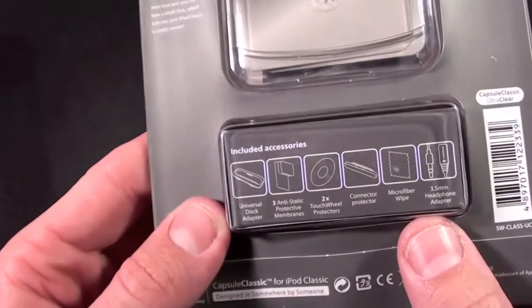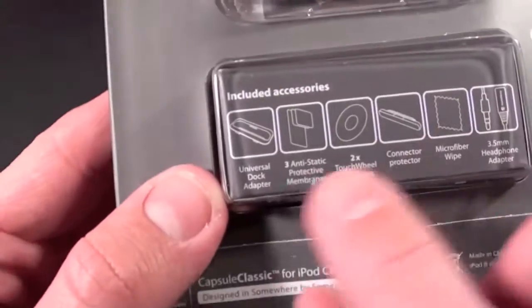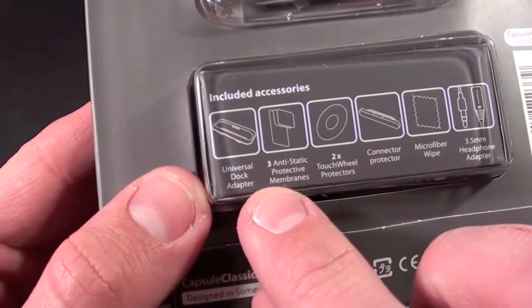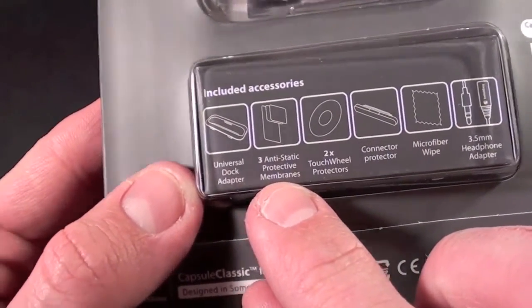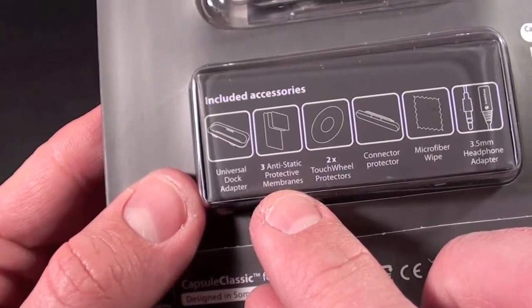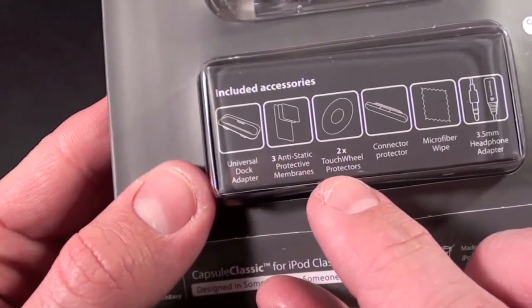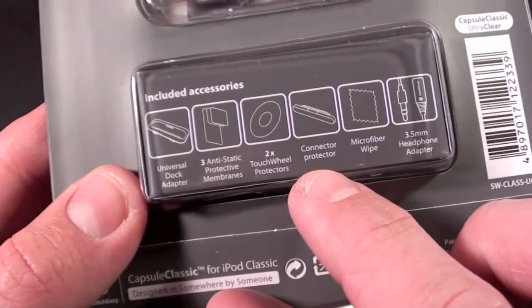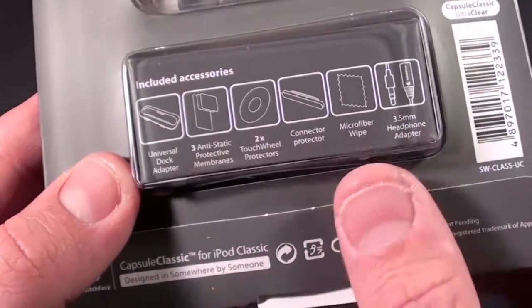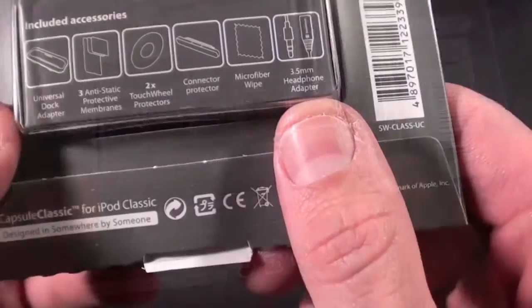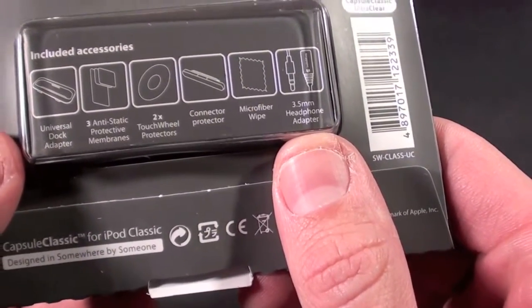Here we have the accessory box. Inside you get some dock adapters which fit the case, two or actually three anti-static protective membranes (two for the screen, one for the back), two for the touch wheel, a dock connector protector, a microfiber wipe, and a 3.5 millimeter headphone adapter.